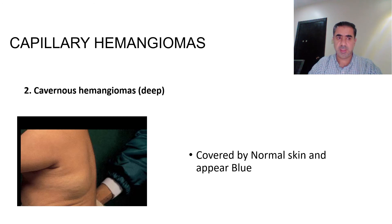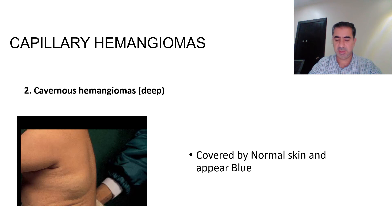The second type of capillary hemangioma is the deep one, called cavernous hemangioma. It is usually covered by normal skin and appears blue.